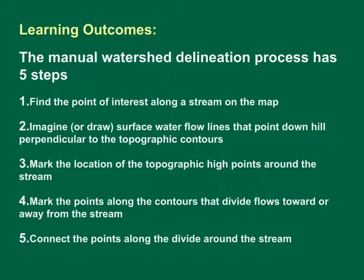Third, mark the location of the topographic high points around the stream. Fourth, mark the points along the contours that divide flows toward or away from the stream. Fifth, connect the points along the divide around the stream to delineate the watershed. Now, you should be able to manually delineate a simple watershed.